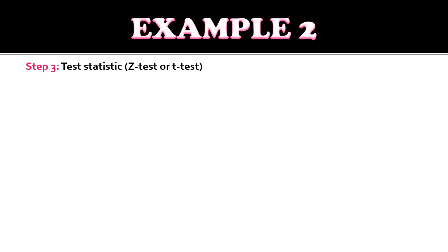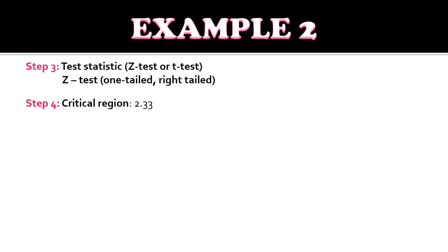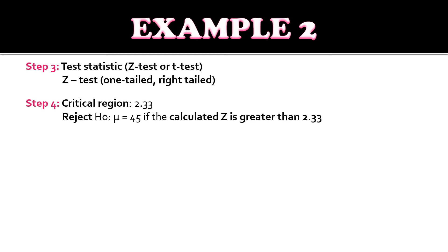For step three, we identify the test statistic. We will be using the Z-test, one-tailed at the right side. For step four, we identify the critical region. With a level of significance of 0.01, the critical value for a one-tailed test is 2.33. We reject the null hypothesis — mean equals 45 — if the calculated Z is greater than 2.33.